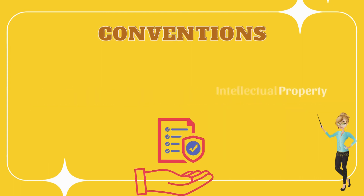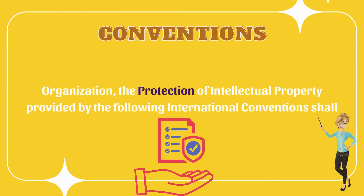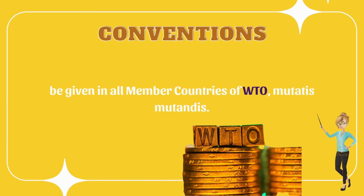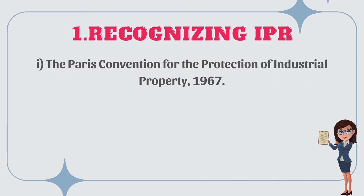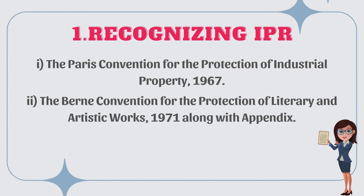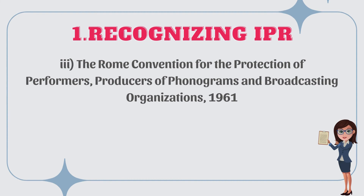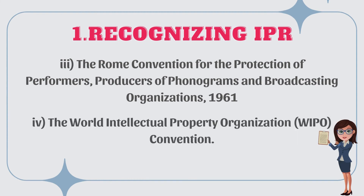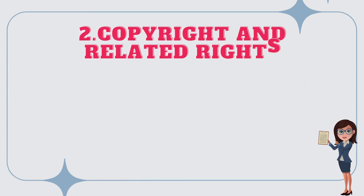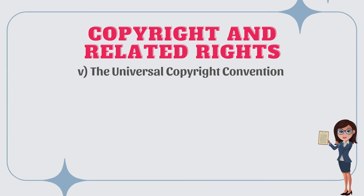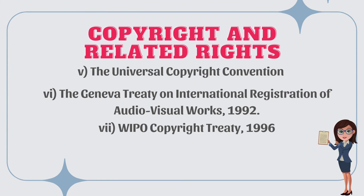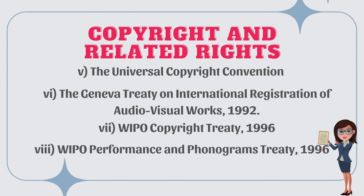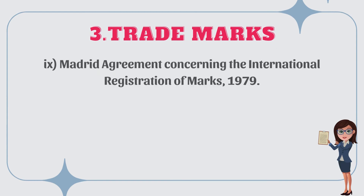Conventions: according to the TRIPS Agreement of the WTO, the protection of intellectual property provided by the following international conventions shall be given in all member countries mutatis mutandis. Number one, recognizing IPR: the Paris Convention for the Protection of Industrial Property 1967; the Berne Convention for the Protection of Literary and Artistic Works 1971 along with appendix; the Rome Convention for the Protection of Performers, Producers of Phonograms and Broadcasting Organizations 1961; and the World Intellectual Property Organization Convention. Number two, copyright and related rights: the Universal Copyright Convention with protocols; the Geneva Treaty on International Registration of Audio Visual Works 1992; WIPO Copyright Treaty 1996; WIPO Performance and Phonograms Treaty 1996. Number three, trademarks: the Madrid Agreement concerning the International Registration of Marks 1979.